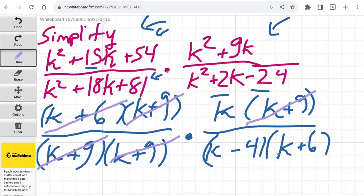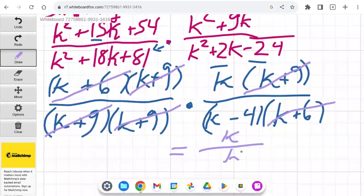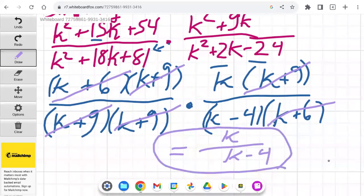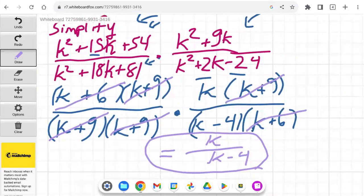And then we have k plus 6 here and a k plus 6 here, so we can divide out those terms. We cannot divide out any further terms, so we are left with k divided by k minus 4. And that is as simplified as we can go. So that is our final answer.